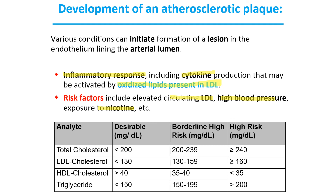At the bottom there is a table showing different types of lipids and their desirable, borderline, and high-risk amounts. Total cholesterol: less than 200 is desirable, 200–239 is borderline, and greater than 240 is high risk. LDL should be kept lower than 130; greater than 160 is high risk. HDL — the good cholesterol — should be greater than 40; less than 35 means lifestyle changes are needed to raise it. Triglycerides should be less than 150 in a normal patient.